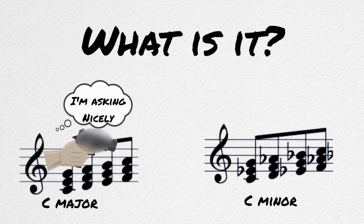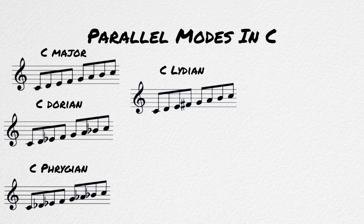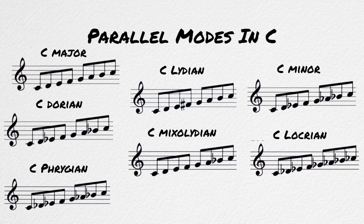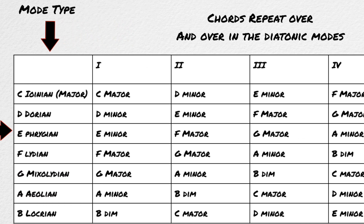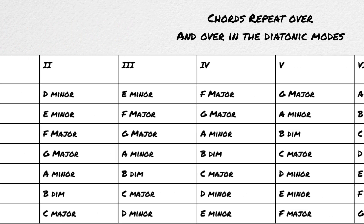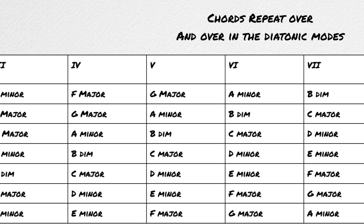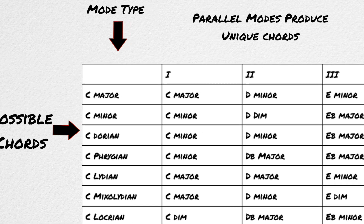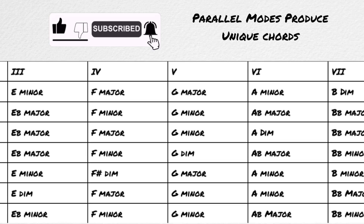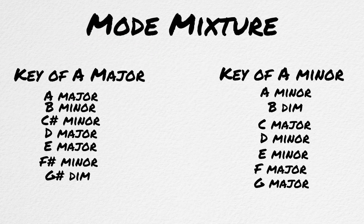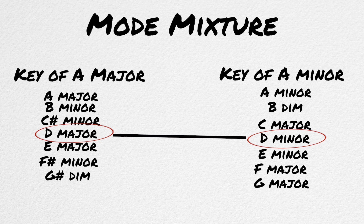Mode mixture is the idea of borrowing a chord from a parallel mode. By parallel mode, I mean the modes that start on the same root note as the key you are in, as opposed to the diatonic modes. The diatonic modes all belong to the same key and have the same key signature, and thus they all contain the same chords, just in a different order. The parallel modes all share the same root note, but do not share the same key signature and thus have different chords within them. You take a chord in the key you are working on and swap it out for the same number chord in a parallel mode.